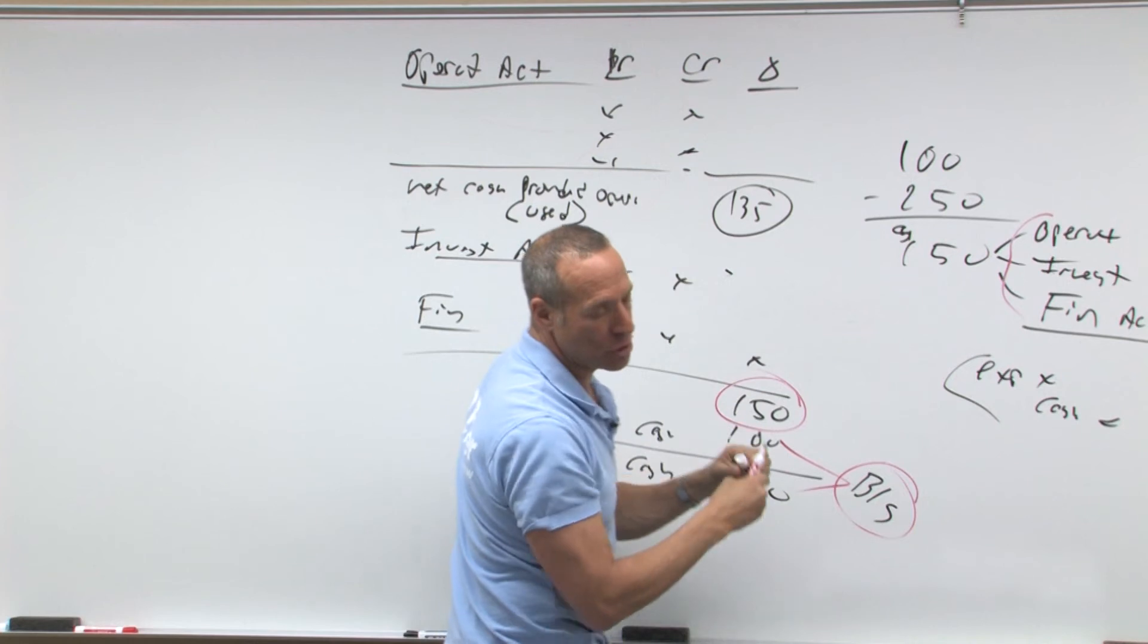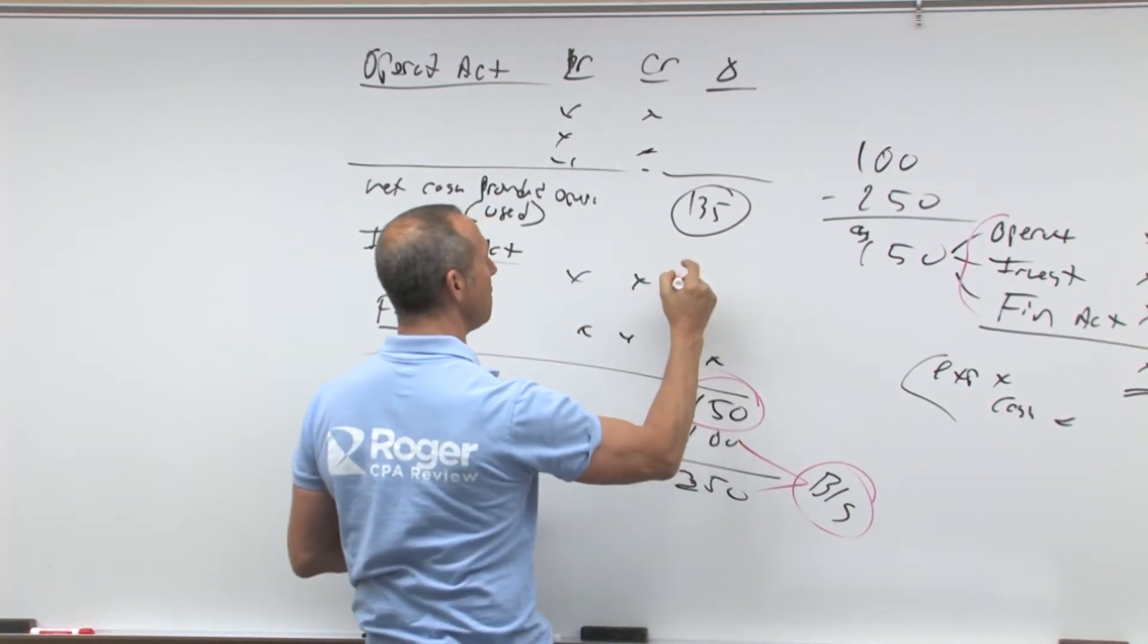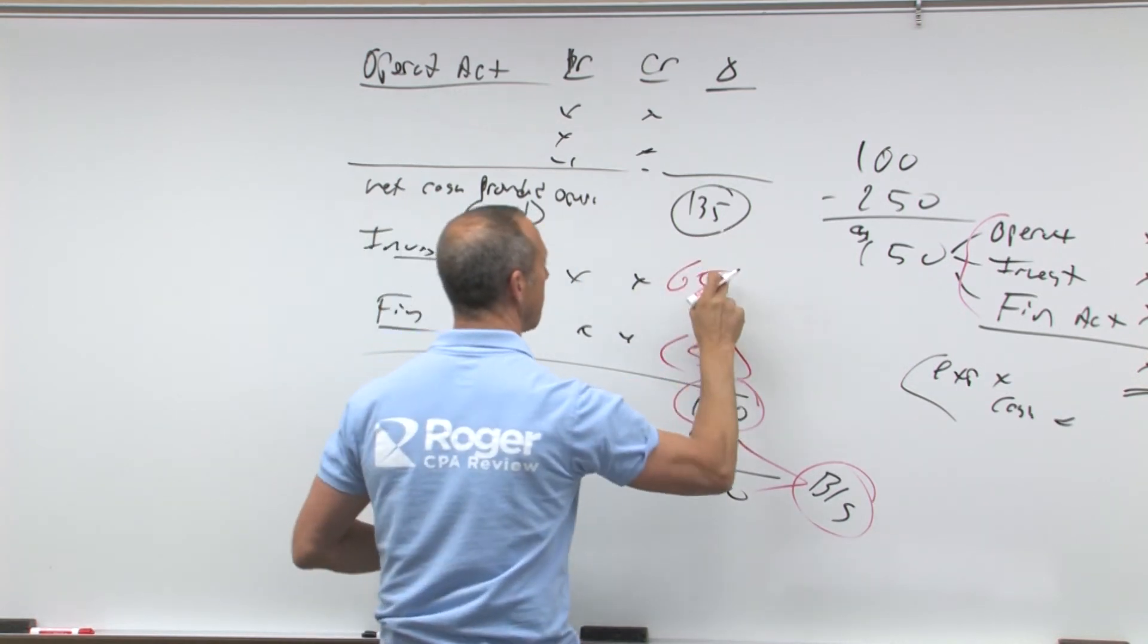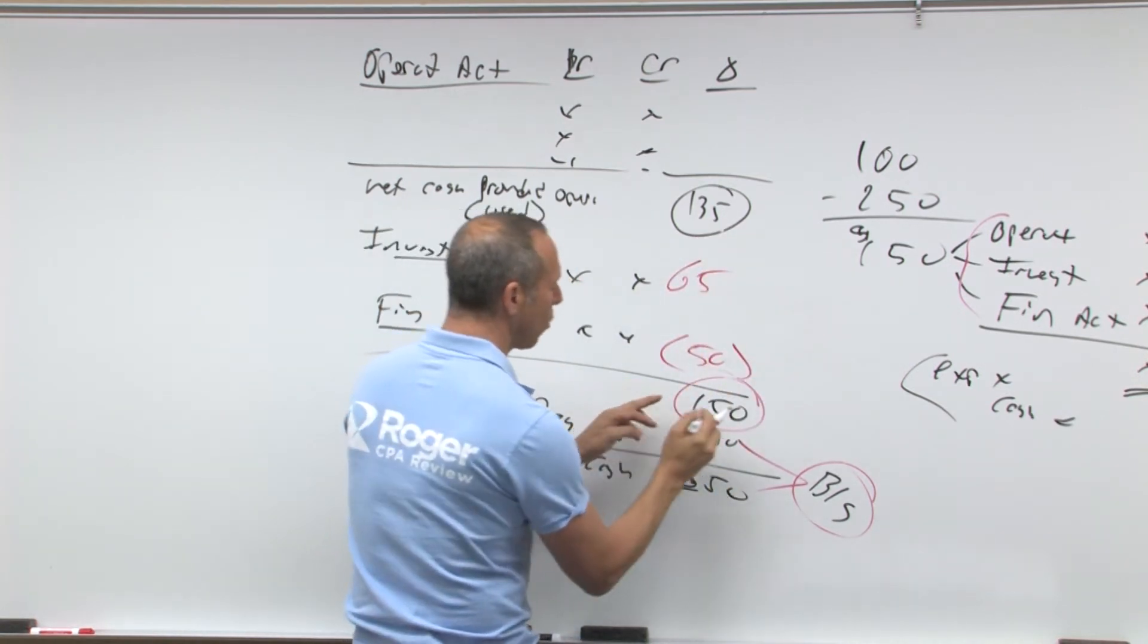And that's what we're looking at. How much came from operating? 135. How much came from investing? 65. How much went out for financing? 50. This, plus or minus this, plus or minus this, equals this.